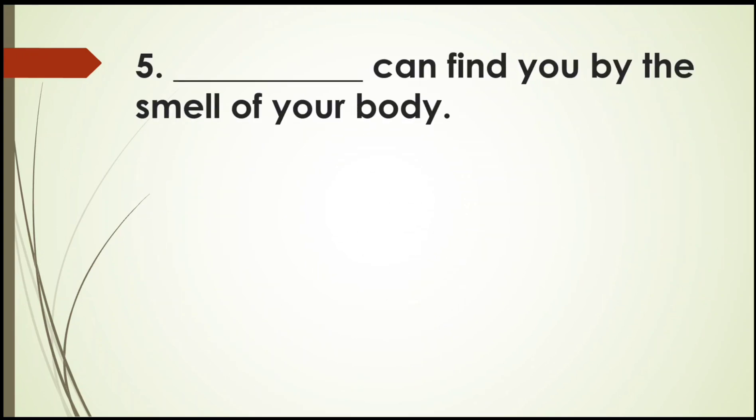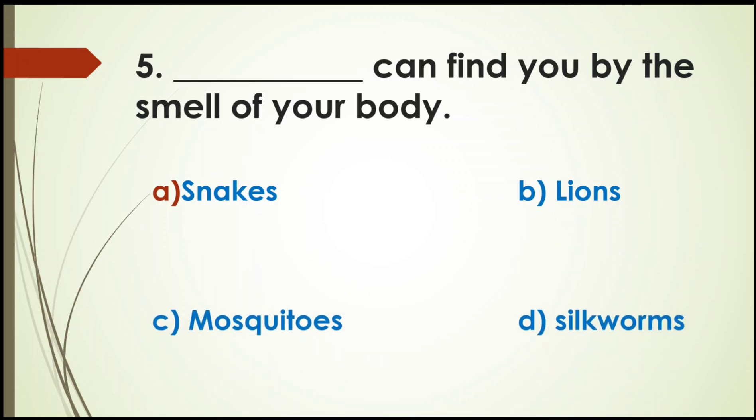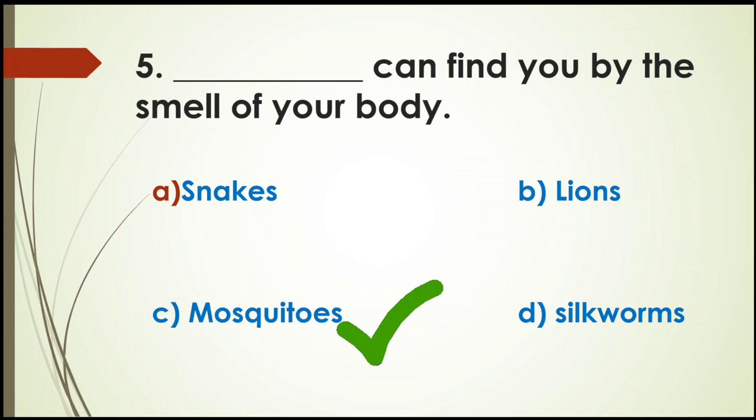Next question. Dash can find you by the smell of your body. Options: Snakes, Lions, Mosquitoes, or Silkworms. Right answer is Mosquitoes. Mosquitoes can bite you even in a dark room. Why? Because they can find you by the smell of your body. So right answer is Mosquitoes.